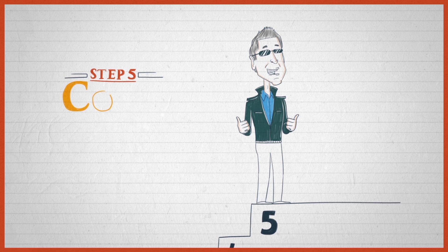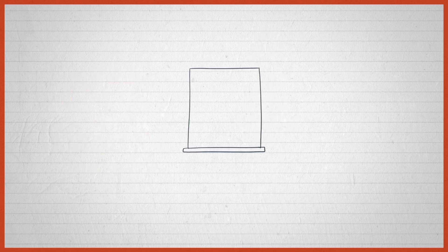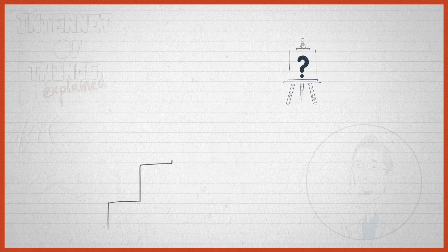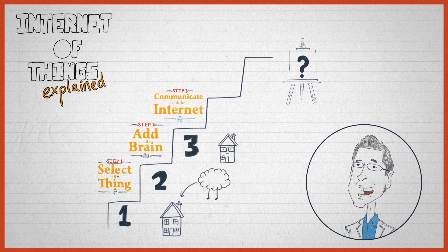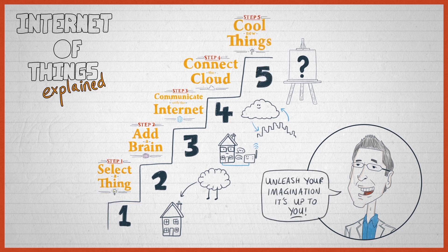And so you get to step five, which is making cool new things happen. What happens in this step will be driven by the problems you have or by the opportunities you see. This step should only be limited by imagination. Once you select things, embed a brain, hook it to the internet — once that infrastructure, that framework, that skeleton is in place — the rest is about unleashing imagination.